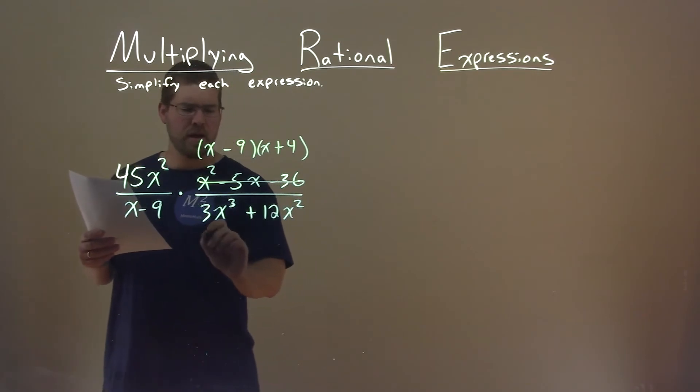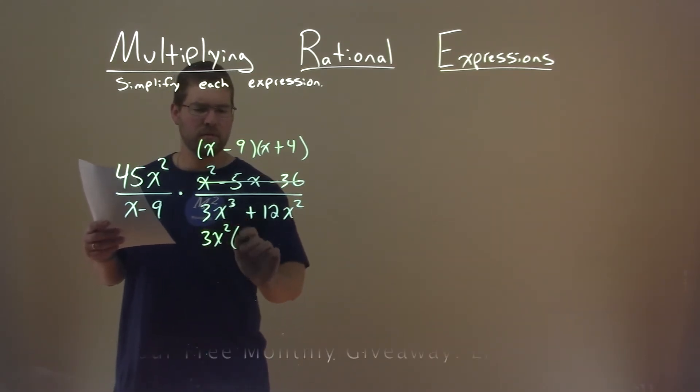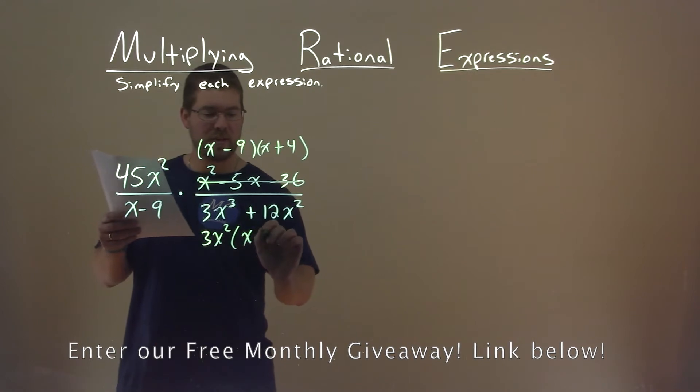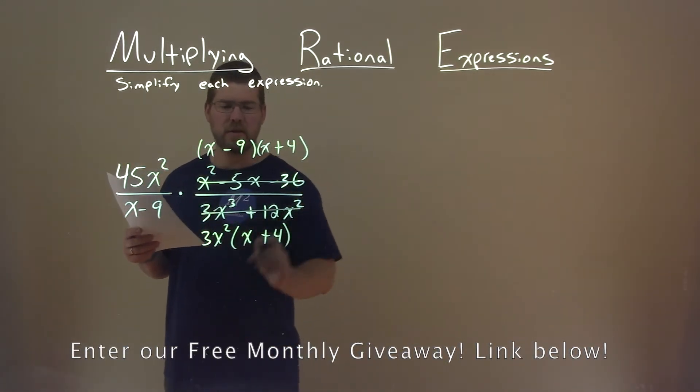The denominator is the same thing. 3x squared is in both parts. Pulling that out, I'm left with just an x plus 4 there. So we'll replace that as well.